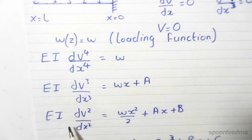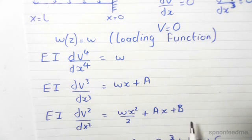Integrating again, we find that EI d²v/dx² equals Wx²/2 plus Ax plus B.